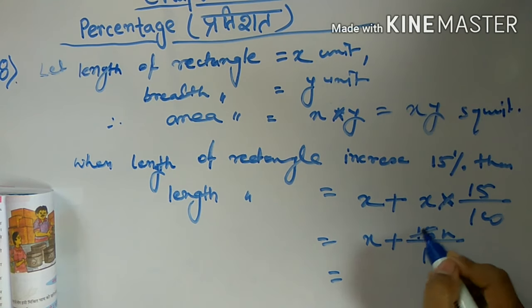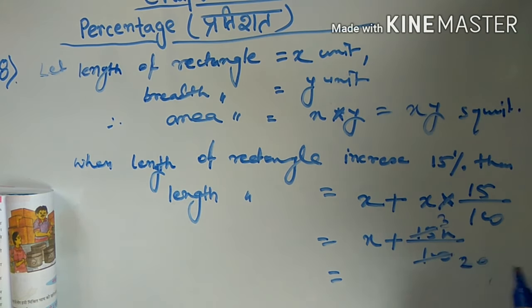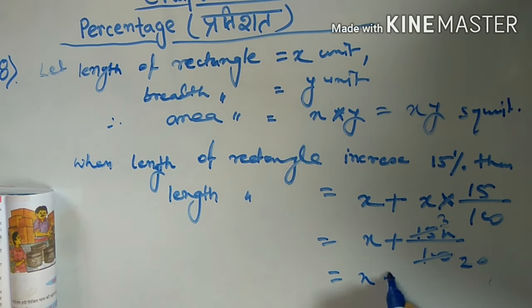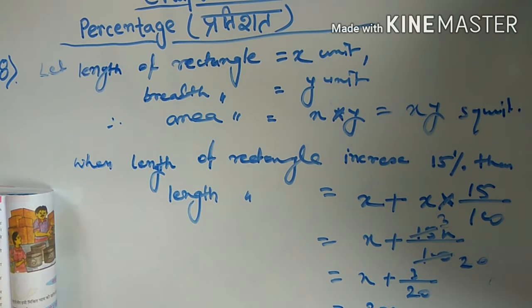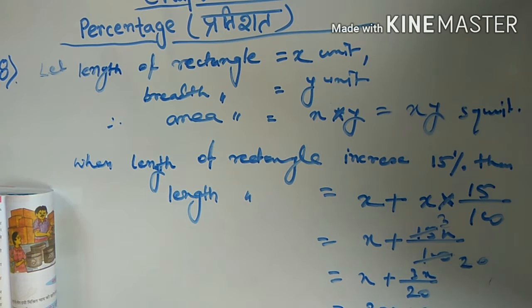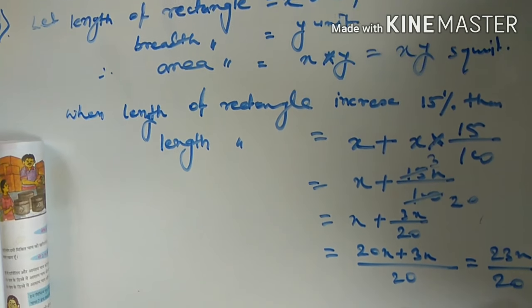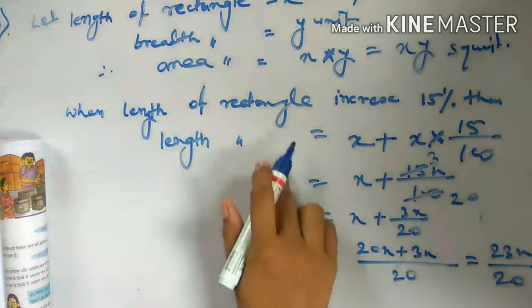Now simplifying: 3 fives are 15 and 2 fives are 100, so 15x/100 simplifies to 3x/20. Therefore the new length equals x plus 3x by 20, which gives 20x plus 3x all over 20, that is 23x by 20. So the new length is 23x/20.